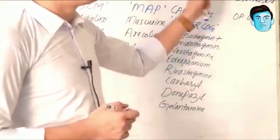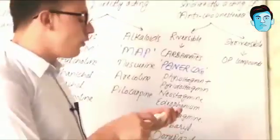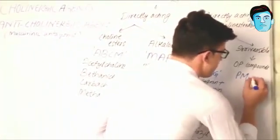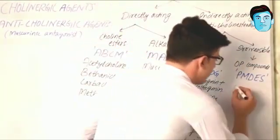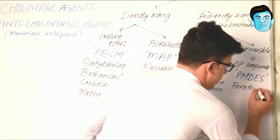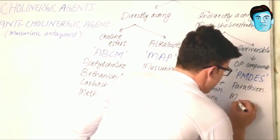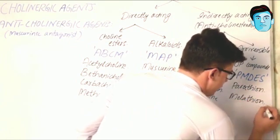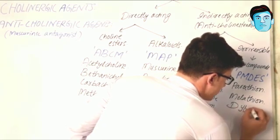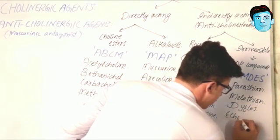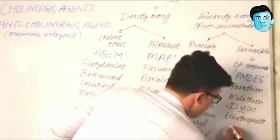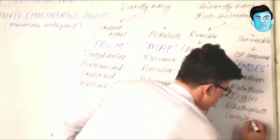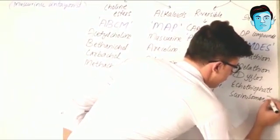Now let's talk about the irreversible anticholinesterases. For that we have a trick: PMDES, where P stands for Parathion, M stands for Malathion, D stands for Dyflos, E stands for Ecothiopate, and S stands for Sarin, Soman, and Tabun. These latter agents are also called nerve gases.